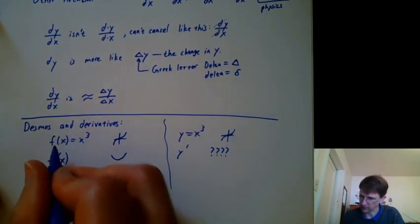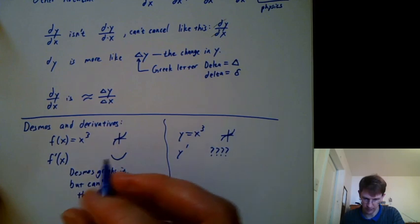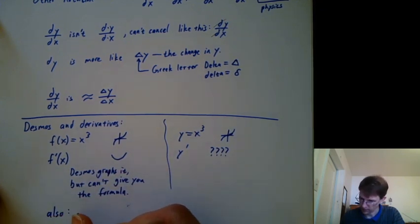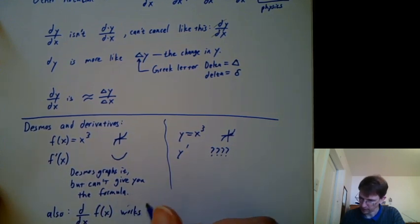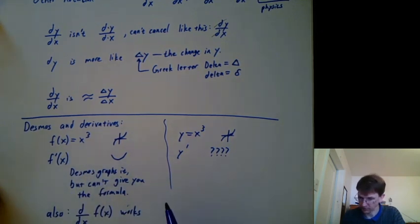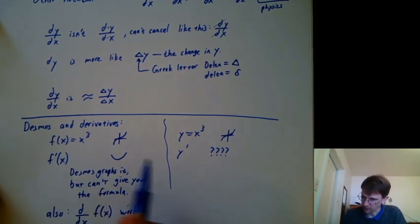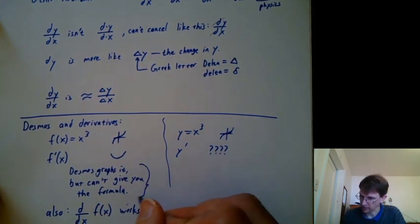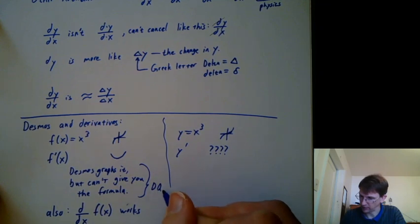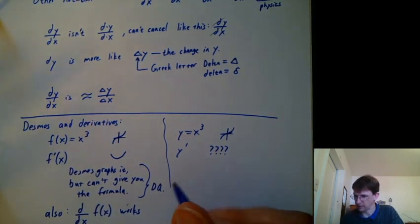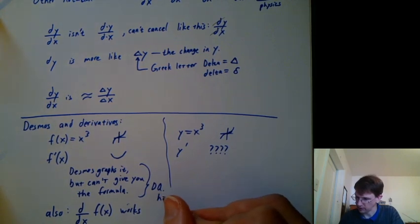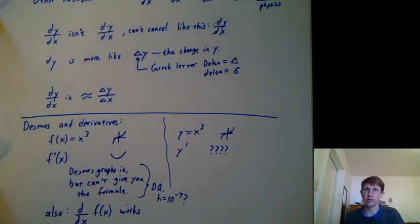So it's much better to use f of x equals something than y equals something. Other good news, desmos also understands d over dx f of x. That works just as well as f prime, and in some cases it works better than f prime. You might be wondering, how does desmos graph this if it doesn't know the formula? It basically does the difference quotient repeatedly. It does it all behind the scenes. It uses a very small delta x, like 10 to the negative 7th, maybe. So that's some good news about desmos.